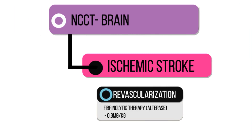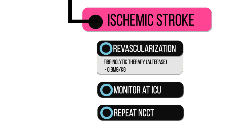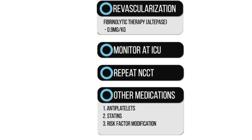Following thrombolysis, the patient should be monitored at an intensive care unit. After 24 hours, another non-contrast CT is taken to exclude hemorrhagic transformation in the brain. After excluding this, we start antiplatelet drugs and statins. We also investigate to find the etiologies for the stroke and manage those risk factors.